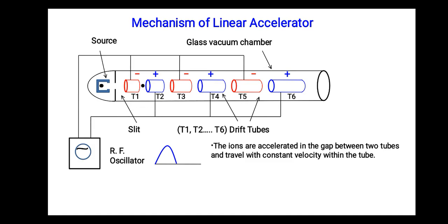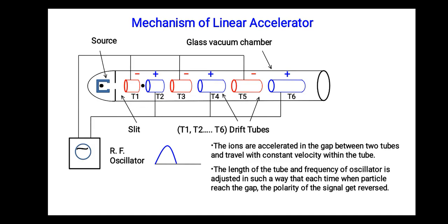Now you must note some important things: the ions are accelerated in the gap between two tubes and travel with constant velocity within the tube. The length of the tube and frequency of oscillator is adjusted in such a way that each time when particles reach the gap, the polarity of the signal gets reversed.